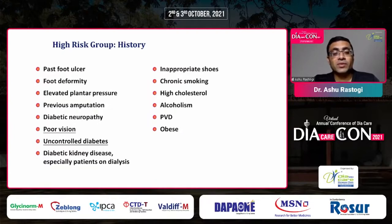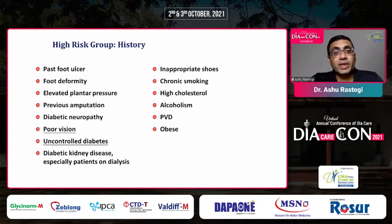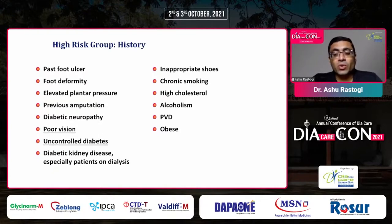Poor vision is also a cause of foot ulcer occurrence. If a patient is having diabetic nephropathy and is on dialysis, the risk of foot ulcers or foot complications is around five to six times higher. Also note patients with inappropriate shoes, those who are smokers or alcoholic, those with peripheral vascular disease, and claudication — which is very pertinent for the risk of foot ulcers. Obesity has also been shown to carry a higher risk.